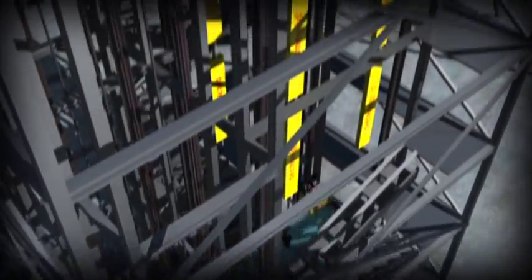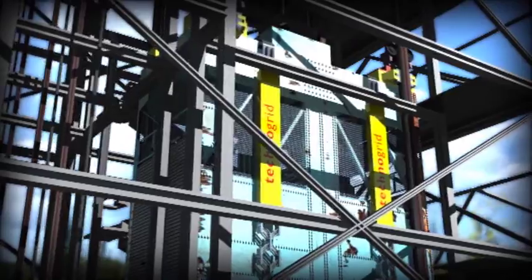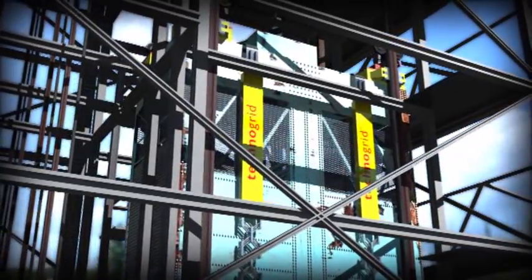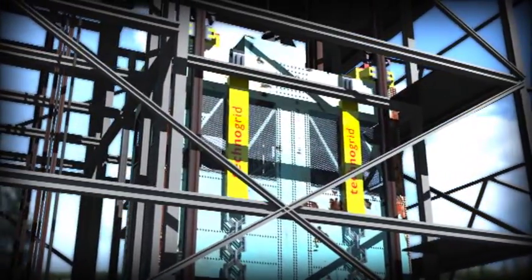In the event of overwind, Technogrid's units are pulled apart by the conveyance impact, placing the units in tension and initiating the safe absorption of kinetic energy.